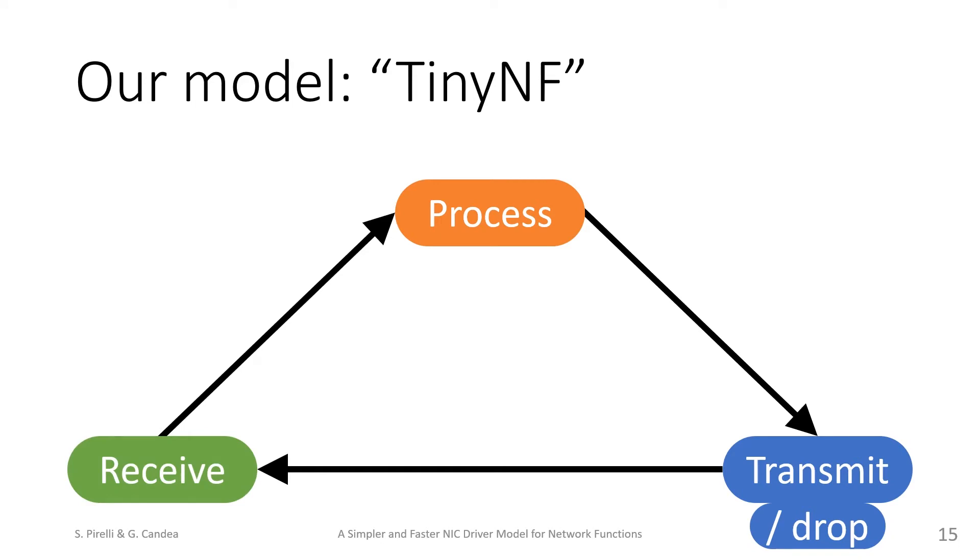The network function can then process buffers, one by one, after which it must either transmit or drop them. It cannot keep buffers around. One key aspect of this design is that transmitting and dropping packets are done in the same way, thanks to modern network hardware.